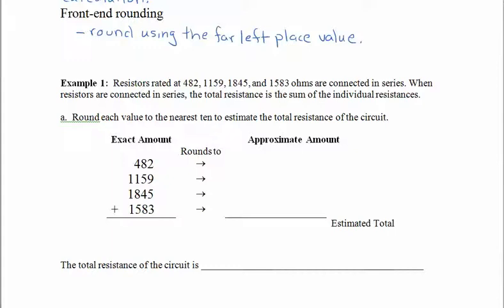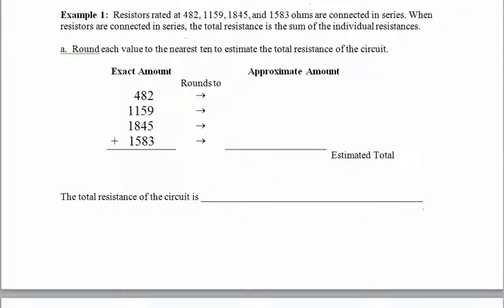Okay, so let's try some examples. Here we are, example one. We have some resistors rated at 482, 1159, 1845, and 1583 ohms. These resistors are connected in series, and we already know that when resistors are connected in series, the total resistance is the sum of the individual resistances. So all we have to do is add these together. What we'd like to do is estimate the total resistance of the circuit. So our first estimate is going to be created by rounding to the nearest ten. So like before, we will underline the tens place and see what our rounded values are. So 482 rounded to the nearest ten is 480, because that 2 is smaller than 5.